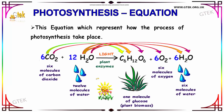Now let us see the equation of photosynthesis. Six molecules of carbon dioxide are added with twelve molecules of water in the presence of light. This light is absorbed by plant enzymes, and this reaction gives one molecule of glucose — that is plant biomass — and six molecules of oxygen and six molecules of water.